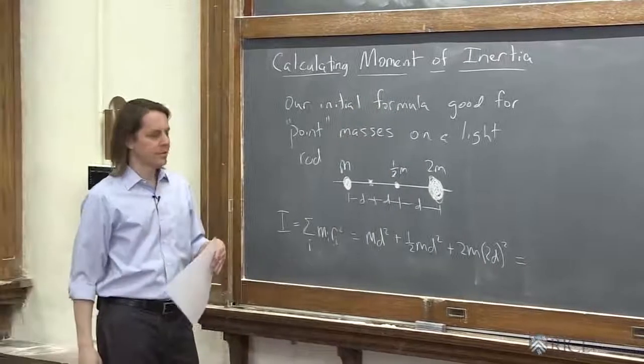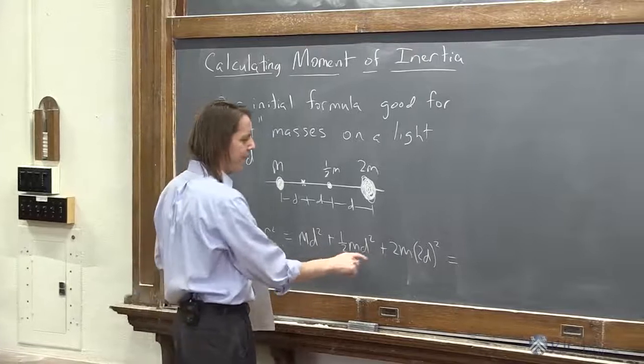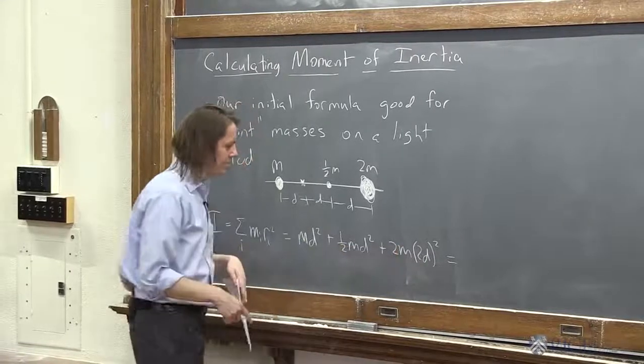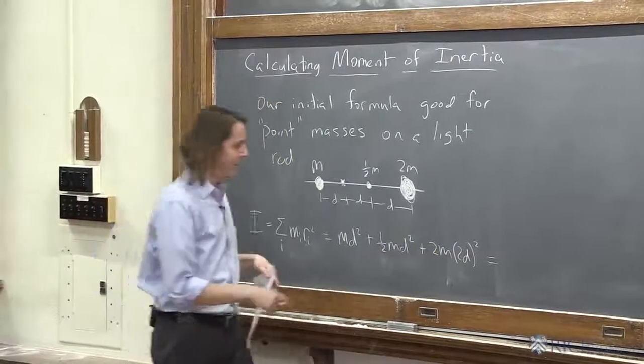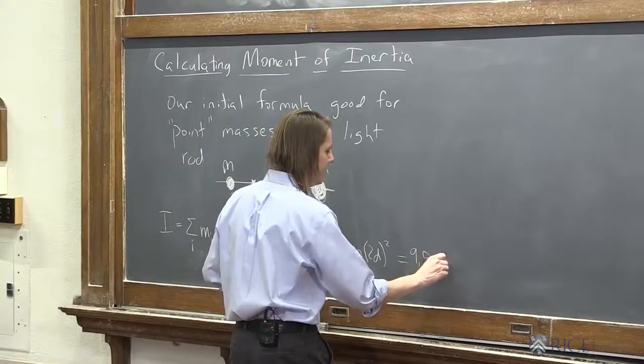So in this case, you would just combine those. I didn't do it ahead of time. It looks like it is 1 and 1 half and plus 8. 9 and 1 half md squared, 9.5 md squared.